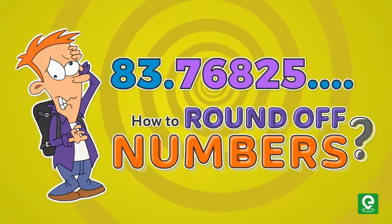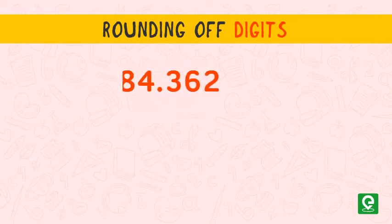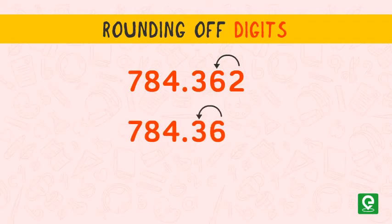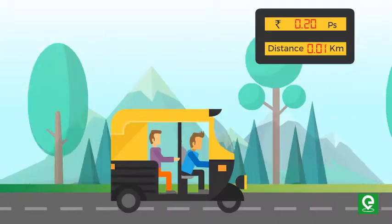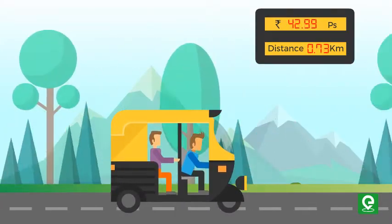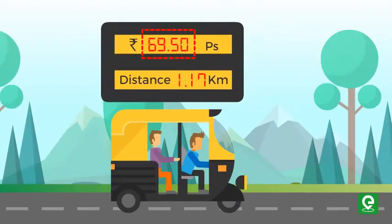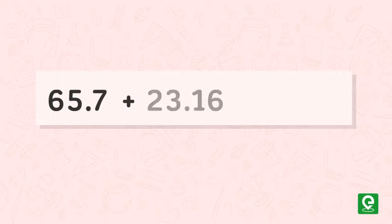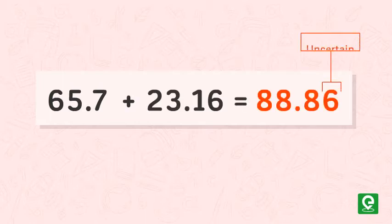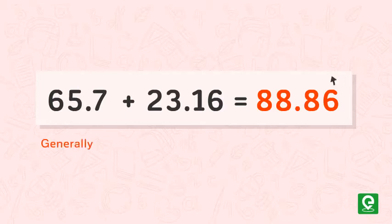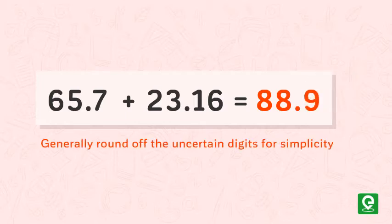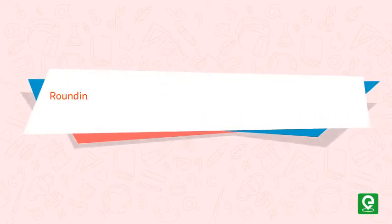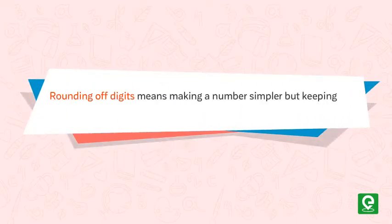How to round off numbers. Rounding of digits is a common thing performed by people in daily life to make financial transactions easier. Suppose you are traveling by rickshaw and the meter falls at rupees 69.50 — most likely you will round it off and pay the driver 70 rupees. While doing calculations using measured values, the results may contain more than one uncertain digit. In such a case, we generally round off the uncertain digits for simplicity. Rounding of digits means making a number simpler but keeping its value close to what it was.